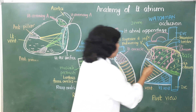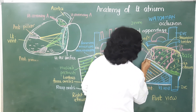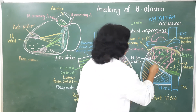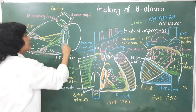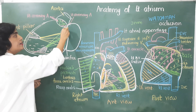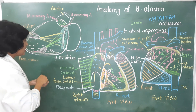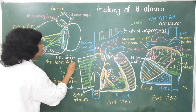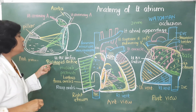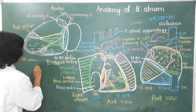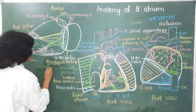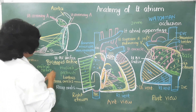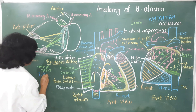The anterior part of the interior of the left atrium shows an orifice — the left atrioventricular orifice — which communicates the left atrium with the left ventricle. This orifice is guarded by an anterior cusp and a posterior cusp. Because there are two cusps, it is called the bicuspid orifice, also known as the mitral orifice. The circumference of this left atrioventricular orifice measures approximately seven to nine centimeters.